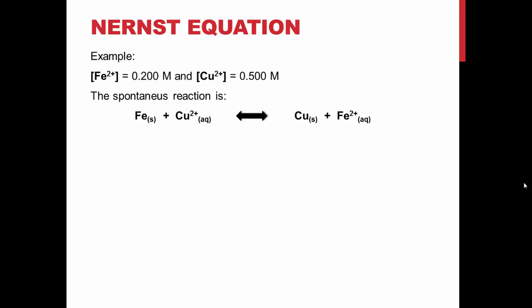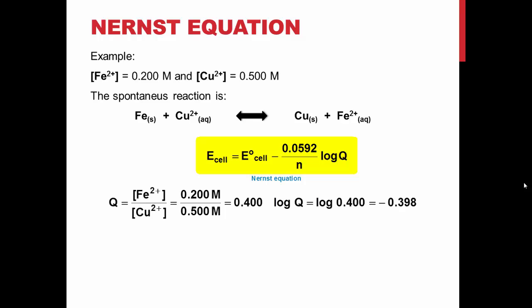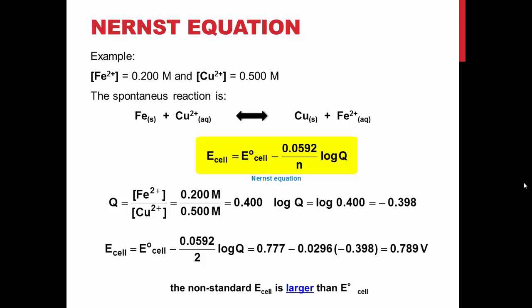Going back to our iron-copper oxidation reduction reaction, given the concentration of ions, we are able to use the Nernst equation to calculate non-standard potential. Q is equal to the concentration of iron ions divided by the concentration of copper ions. We put the concentration values into the equation and take the log to get a value of negative 0.398 for this term. Because in the balanced equation, two electrons are exchanged, N is equal to 2. The standard cell potential we calculated from the standard potentials of the two half cells on the previous slide. We can put this value of 0.777 into the equation to solve for the potential of the cell. Inputting all these values into the equation gives us a potential of 0.789 volts for the cell at non-standard state conditions. Notice that this is higher than the cell potential at standard state.